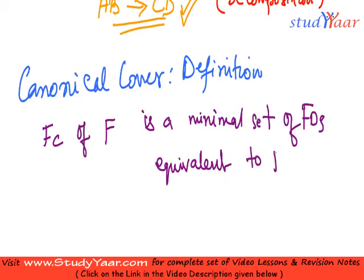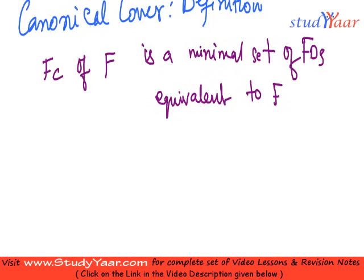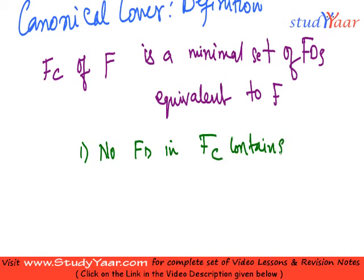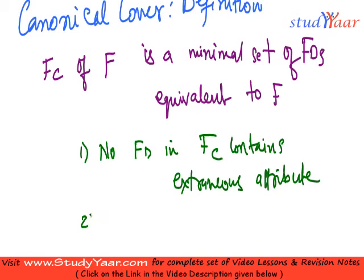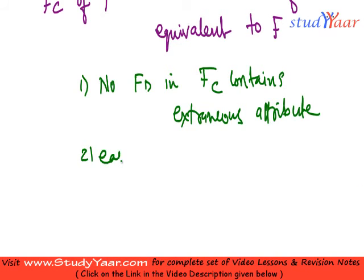We have talked about what equivalence is — if both sets have the same closure, then they are called equivalent. So a canonical cover of F is a minimal set of FDs equivalent to F such that it follows two rules: no FD in FC contains an extraneous attribute, and each left-hand side of an FD in FC is unique.